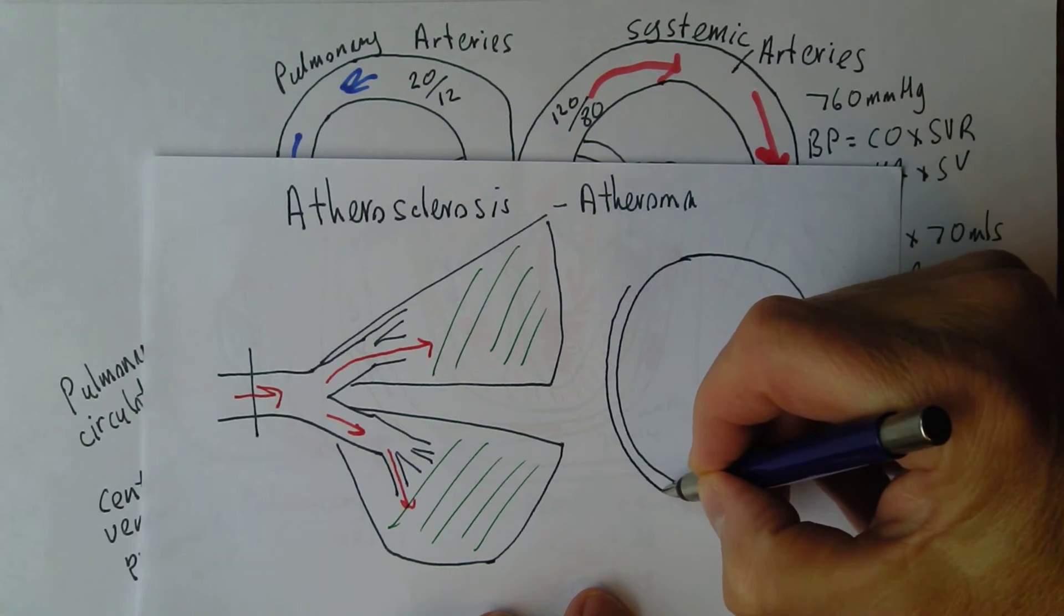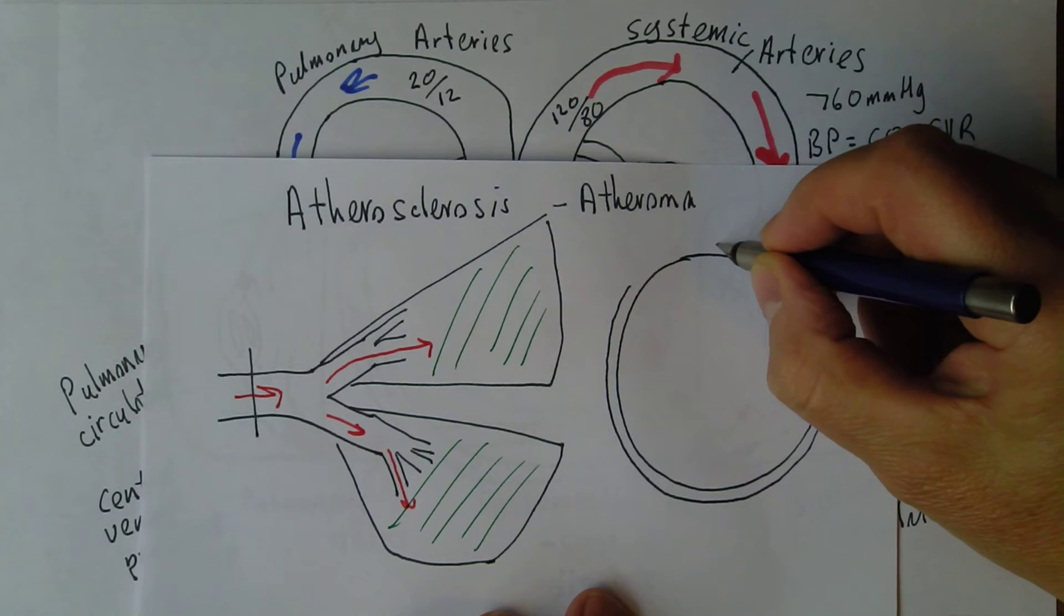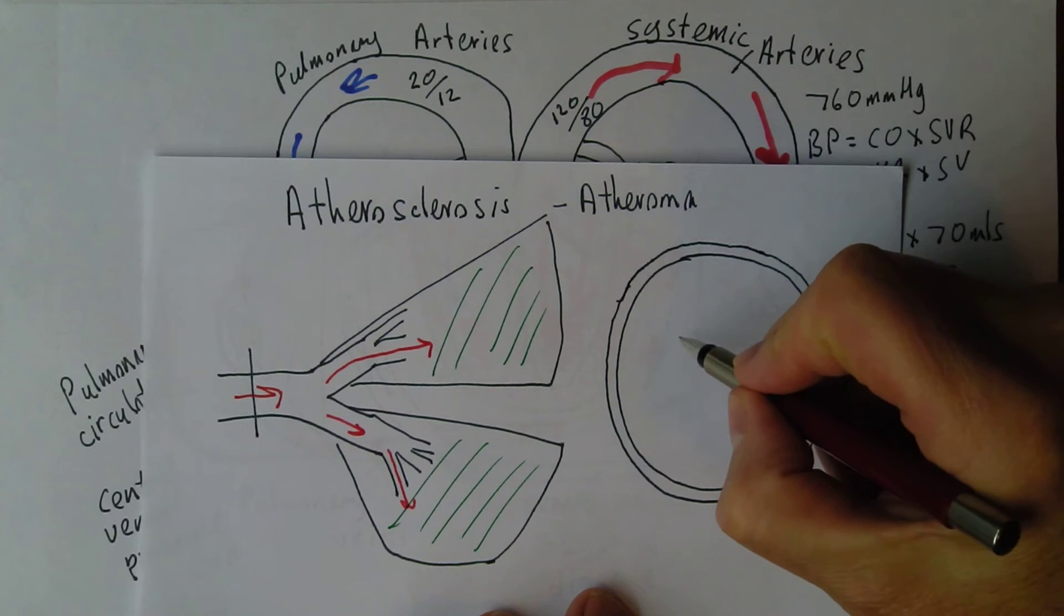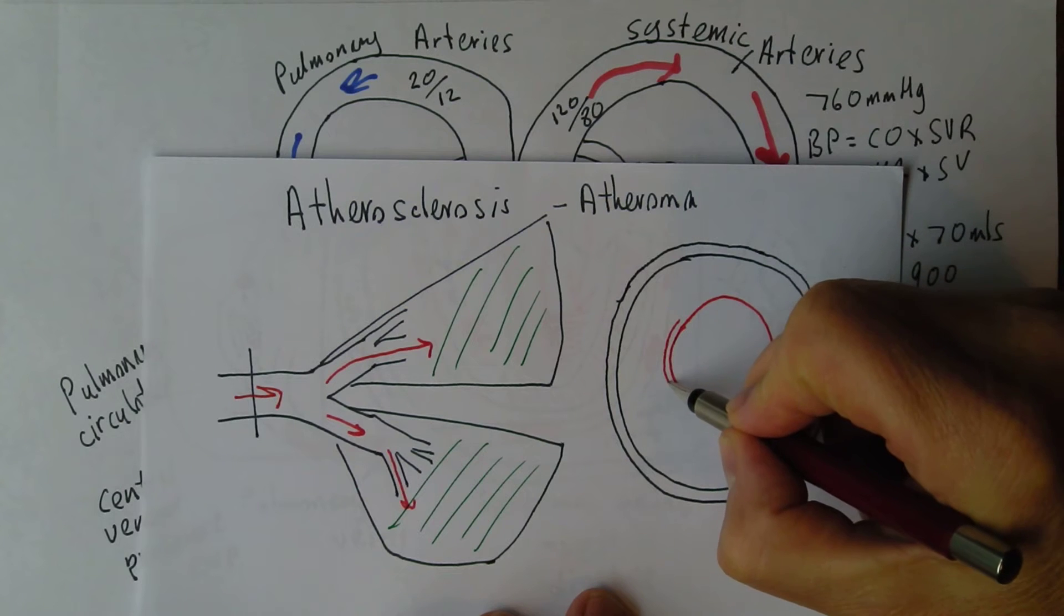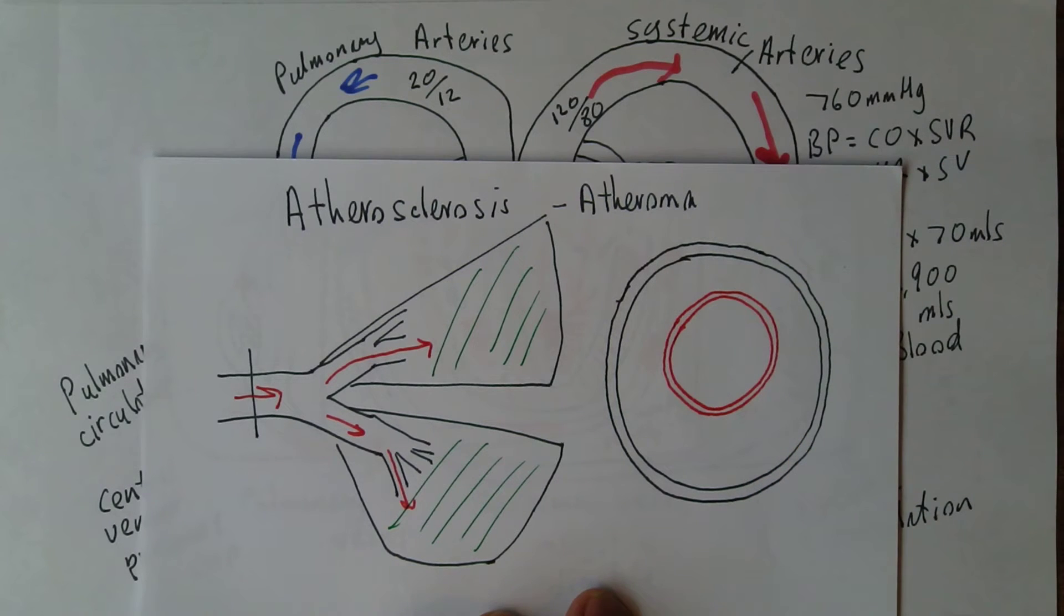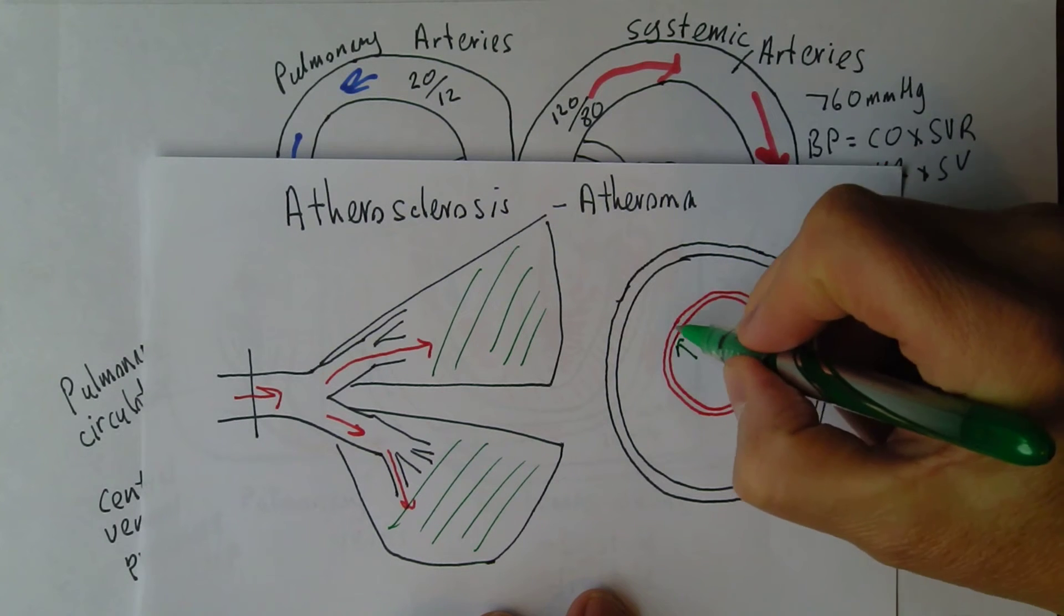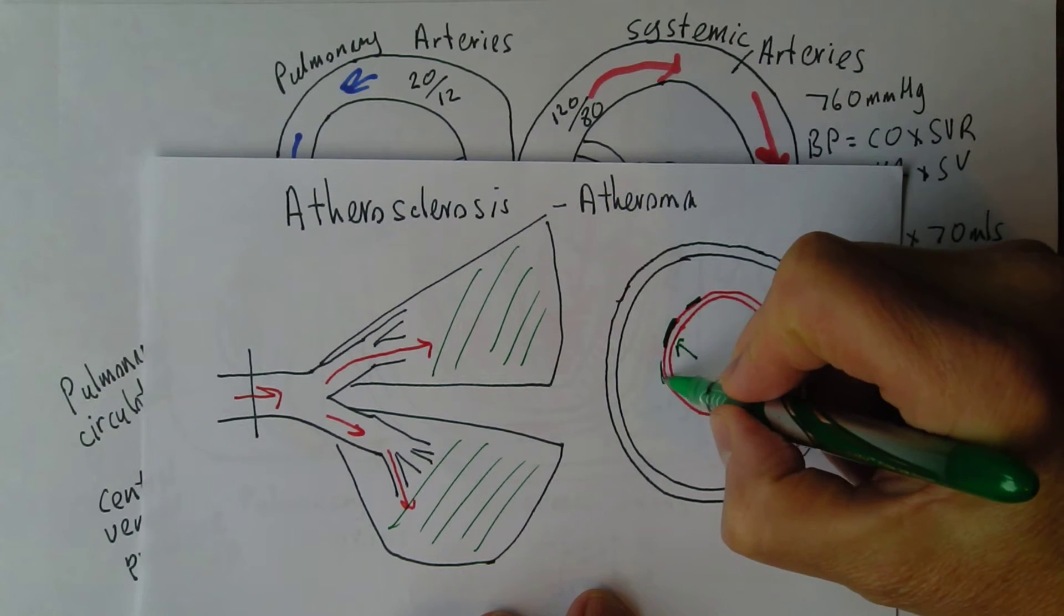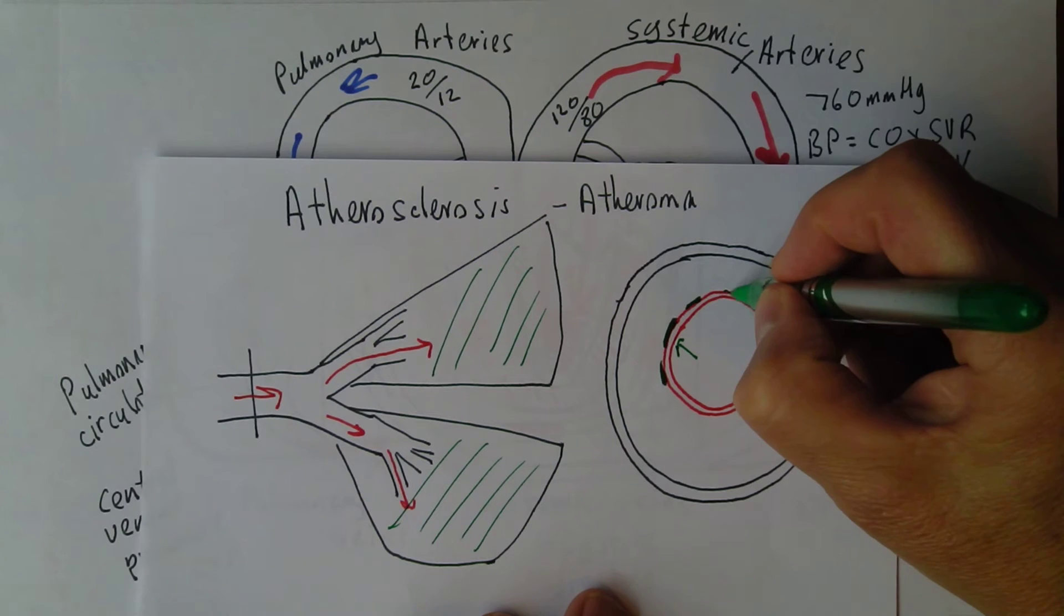There's an outer layer, the tunica adventitia or tunica externa. This is dealt with in more detail in other videos in this series on cardiovascular physiology. There's a thicker middle layer, the tunica media, and a thinner internal layer, the tunica intima. What happens in atherosclerosis is that fatty materials such as cholesterol get through the tunica intima and start accumulating just underneath it. We deal with this in more detail in other videos, but that's what happens.